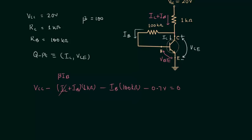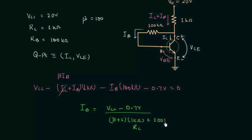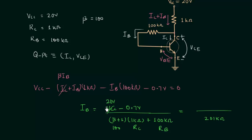When you simplify this equation, you will have base current IB equal to Vcc minus VBE divided by the quantity (beta plus 1) times RC plus RB. That is (101 times 1 kilo ohm) plus 100 kilo ohms in the denominator, giving 201 kilo ohms. Subtracting 0.7 volts from 20 volts gives 19.3 volts.